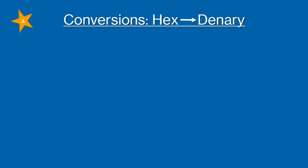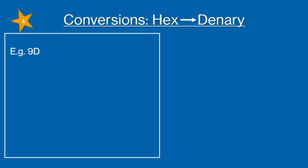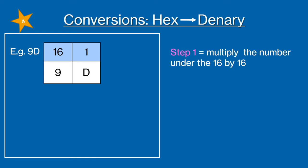The fourth conversion is from hexadecimal to denary. We're going to use the example of 9D. And again you're going to draw your hexadecimal table.